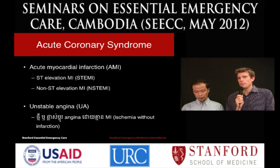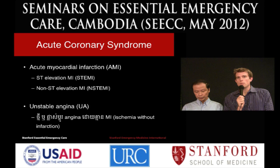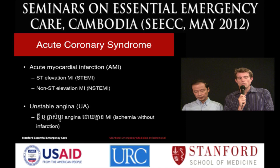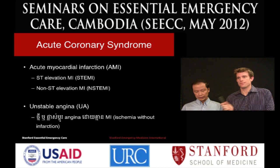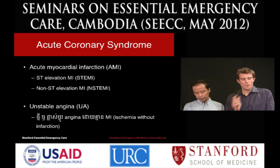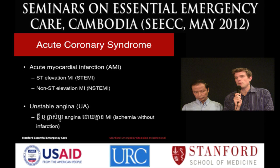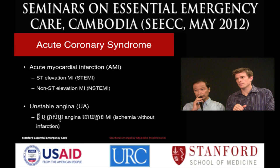Acute Coronary Syndrome is often called ACS. ACS is made up of two conditions: acute myocardial infarction — meaning a new heart attack — and unstable angina. Unstable angina is a term meaning new ischemia, and if left without treatment, patients will often progress to infarction.